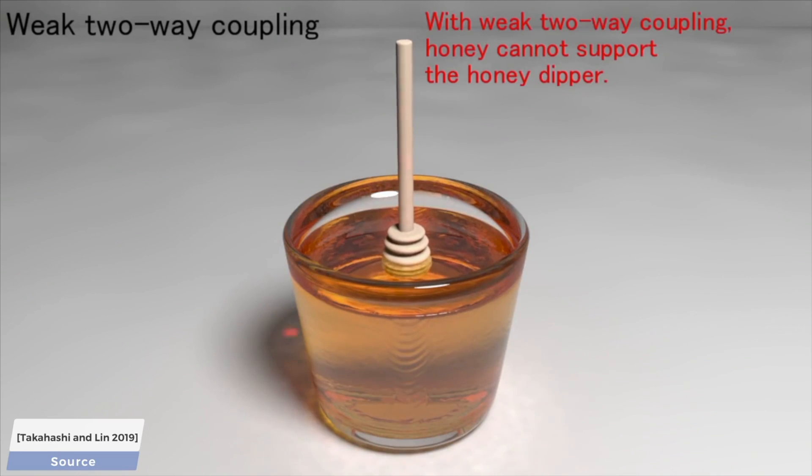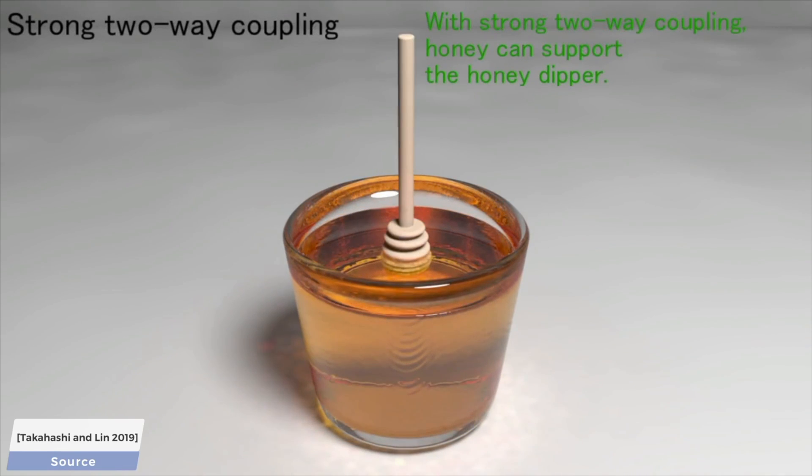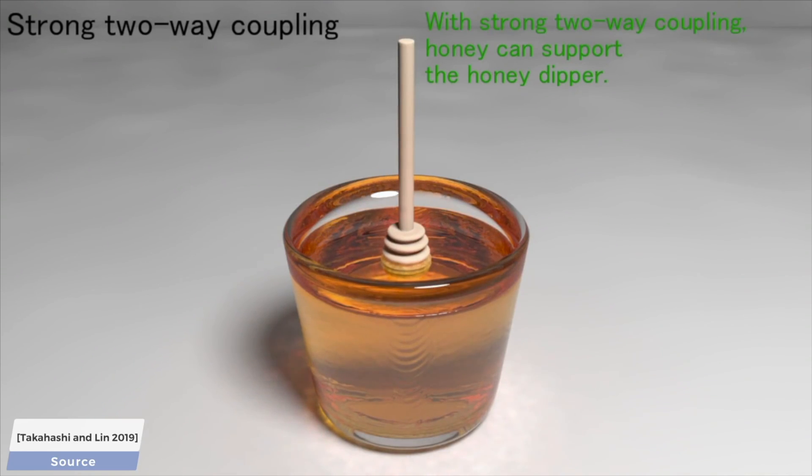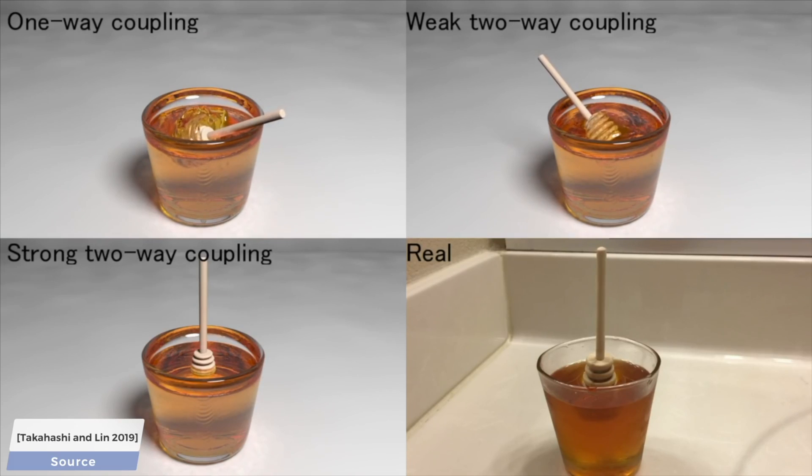We also note that there are different kinds of two-way coupling, and only the more advanced ones can correctly simulate how real honey supports the dipper, and there is barely any movement. This may be about the only place on the internet where we are super happy that nothing at all is happening.